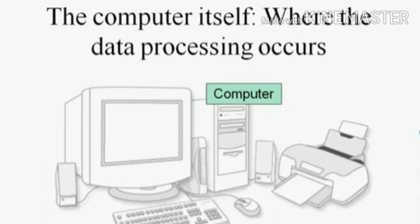Somewhere nearby — either next to the computer, on the floor under the table, or under the computer on top of the table — is a box. It could be vertical or on its side, but it's the computer itself. It's what does all the work, and it has circuit boards, fans, and storage media, ways for other devices to be hooked up to it, and ways for transportable storage media such as CDs and memory sticks to be put in and out of it.